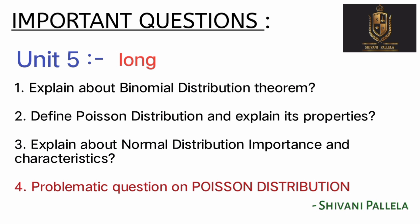For Unit 5, explain binomial distribution theorem, Poisson distribution and its properties — these are very important theory questions. Poisson distribution is a compulsory question. You need to choose from the long law questions.